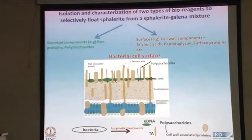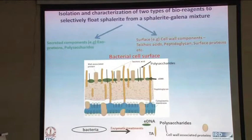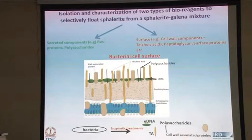The very thick peptidoglycan layer is a very distinguishing feature of the gram-positive organisms. It has several components: the cell wall protein, the teichoic acids, polysaccharides, and the extracellular DNA. We wanted to precisely identify which of these components is actually playing a part in inducing the hydrophobicity, so we did various enzymatic treatments to selectively dissolve either of these components.